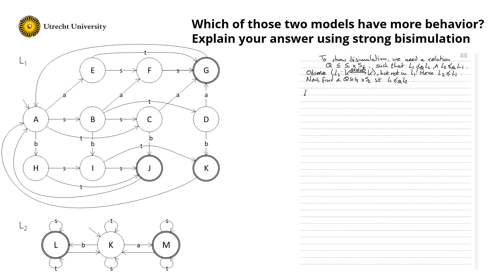So in L1: if I'm in A, I can do an S that brings me to B, a T that brings me to C, an A that brings me to E, and a B that brings me to H. For B, I can do an S that brings me to C, a T that brings me to D, an A that brings me to F, and a B that brings me to I. In C, I can do an A that brings me to G, and a B that brings me to J. In D, I can do an A that brings me to J, and a B that brings me to K.